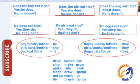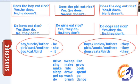Any of these in plural form, we use 'they'. So: does the boy eat rice? Yes, he does. No, he doesn't. Does he drive? Yes, he does. No, he doesn't. Does the boy sing? Yes, he does. No, he doesn't. Does the boy make? Yes, he does. No, he doesn't. Does the boy sleep? Yes, he does. No, he doesn't. Does the boy get up? Yes, he does. No, he doesn't.